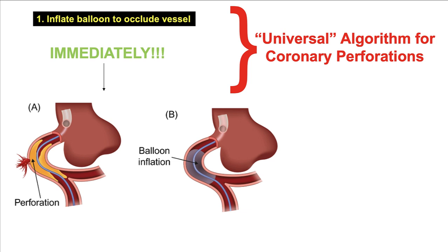Starting with the steps of the algorithm, the very first step for any coronary, and for that matter even peripheral vessel perforation, is to inflate a balloon to occlude the vessel and stop the bleeding into the pericardium. As soon as it becomes apparent that a coronary perforation has occurred, take a balloon and inflate it at the site of perforation or proximal to the site of perforation, and inject contrast to confirm that perforation is no longer bleeding into the pericardium. This is a very important step because if there is a delay, there can be accumulation of significant blood in the pericardium causing tamponade. The balloon should be sized 1-to-1 to the vessel and inflated at low pressure, 6 to 8 atmospheres, to avoid overstretching the vessel and potentially worsening the perforation.